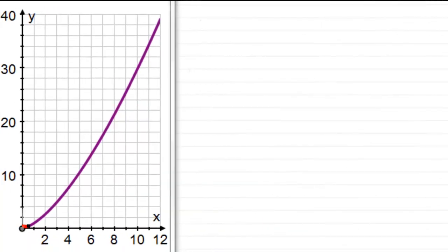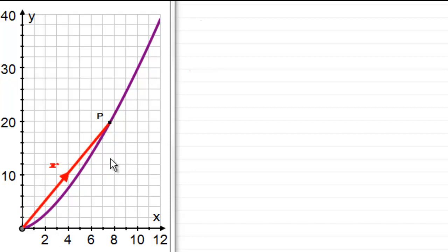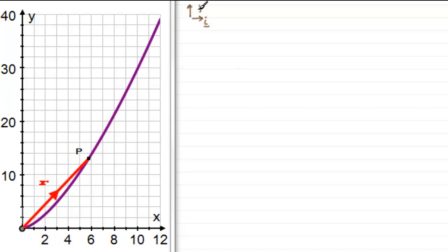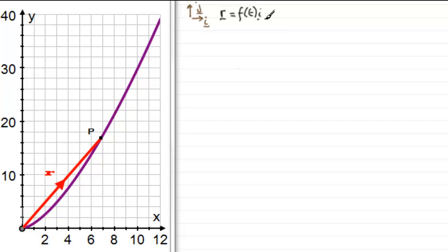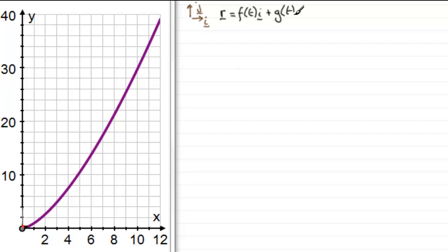Welcome to this video on variable acceleration vectors. Suppose we have a particle P moving along a curve, and at any instant its position vector is given by r. Taking unit base vectors i parallel to the x-axis and j parallel to the y-axis, we can describe r in terms of t: r equals some function f of t in the i direction plus some function g of t in the j direction.